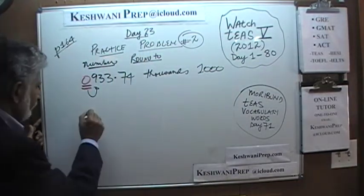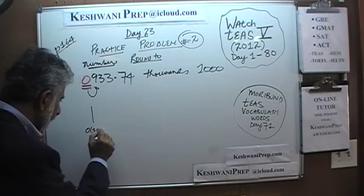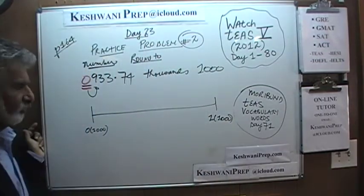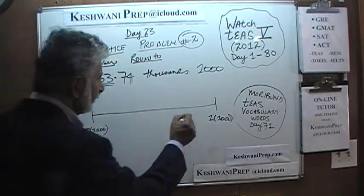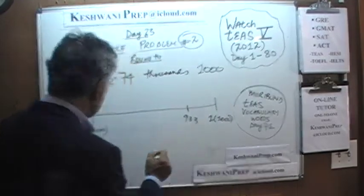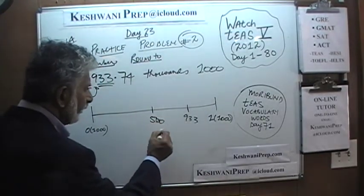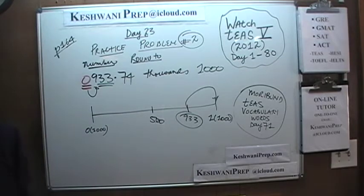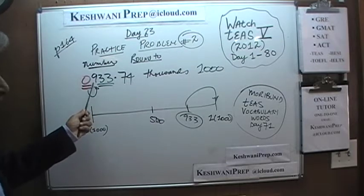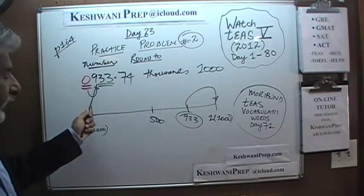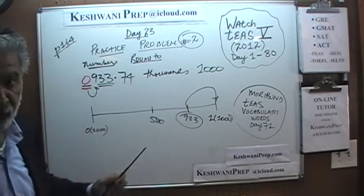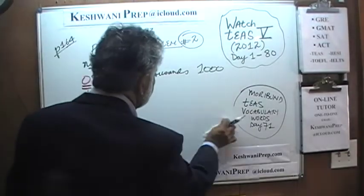This makes sense: here you have zero thousands and all the way here you have one thousand. The halfway mark is 500. 933 falls all the way here, which is closer to a thousand. Had it been 533, you would still round it up because it is more than 500. Had it been 433, then 433 rounded to the nearest thousandth would have become zero.